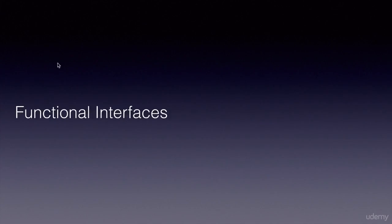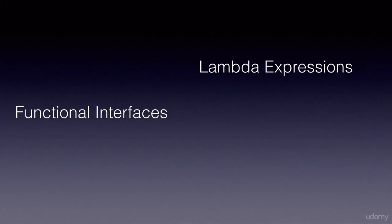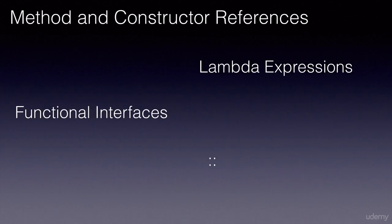You have already learned how to express a functional interface using lambda expressions. Java 8 also introduces a double colon operator, using which we can map methods and constructors to a functional interface's method.